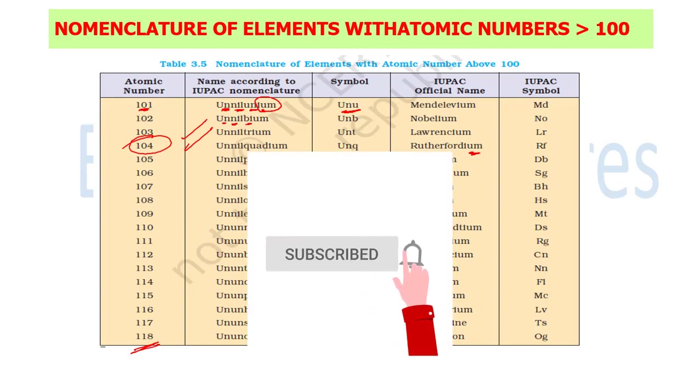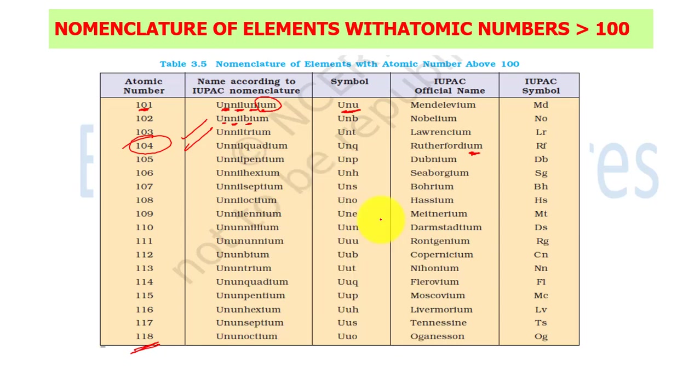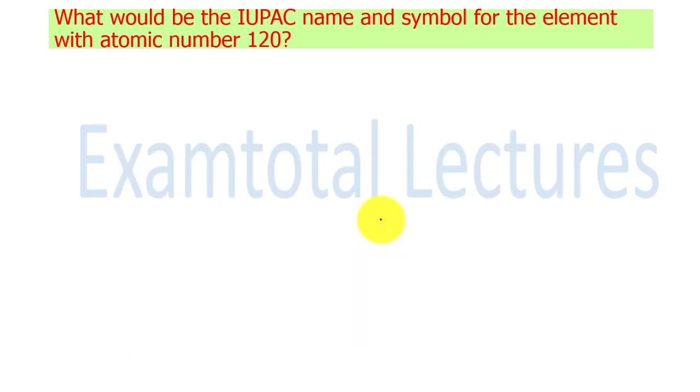Please like this video and don't forget to press the bell icon, otherwise you won't know when the video is uploaded. Please tell us your views. What would be the IUPAC name and symbol of the element with atomic number 120? Try to find the answer. Keep watching the video, thank you very much.